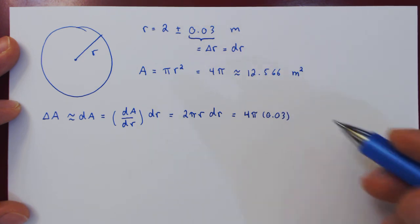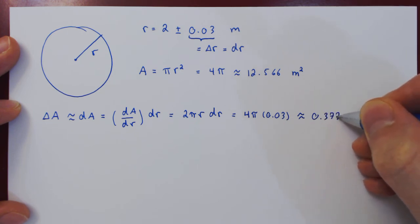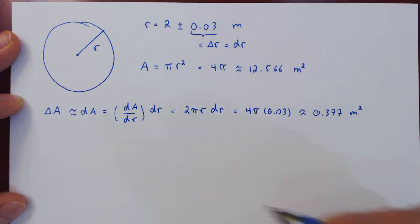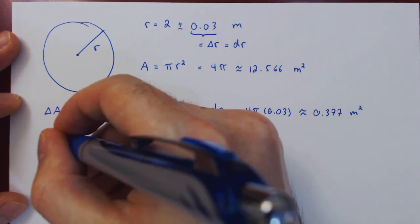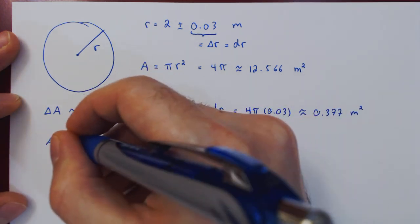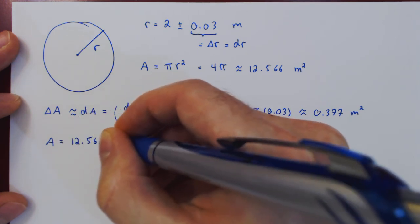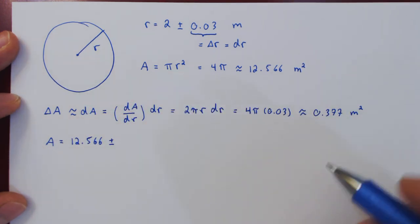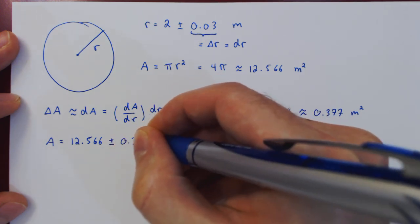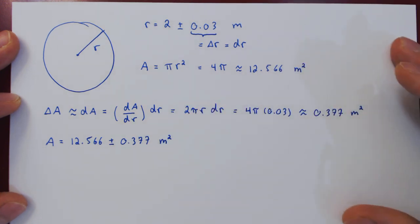Multiplying this out, you obtain approximately 0.377 meter squared. Now we can write down our conclusion. The area of the circle with uncertainty is given by 12.566 plus or minus 0.377 meter squared. That's it.